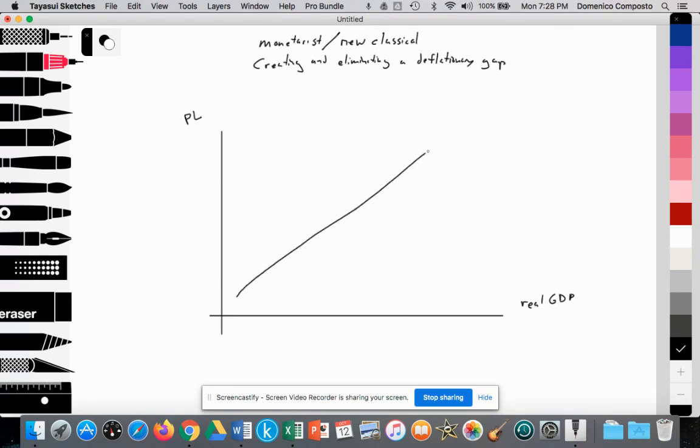We have our upward sloping short-run aggregate supply curve, labeled SRAS1, and our downward sloping aggregate demand curve labeled AD1. The intersection will have that intersect also with our long-run aggregate supply curve, LRAS. This is our starting point. The intersection provides a level of output or production within the economy at full potential, which we'll call YP.